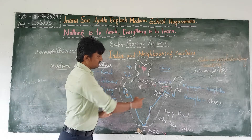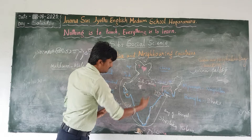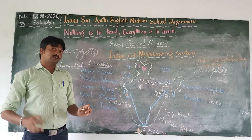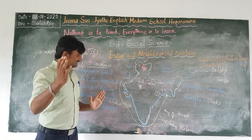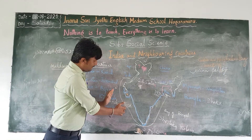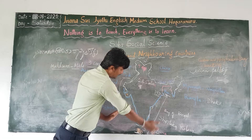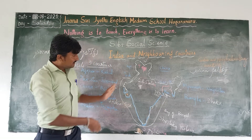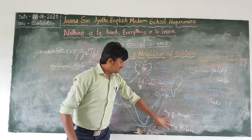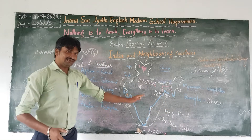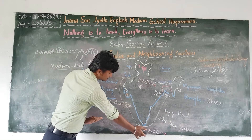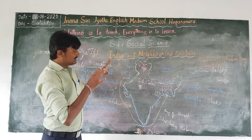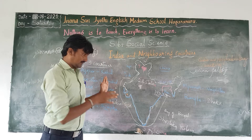Another physical feature of India — the southern part of India is covered with water bodies on three sides. Which are the three sides? The western side, the eastern side, and the southern side. On the western side, India is covered with the Arabian Sea. On the eastern side, India is covered with water bodies. And on the southern side, India is covered with the Indian Ocean. So this is the physical feature of India.